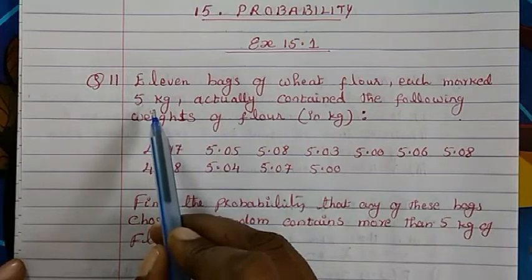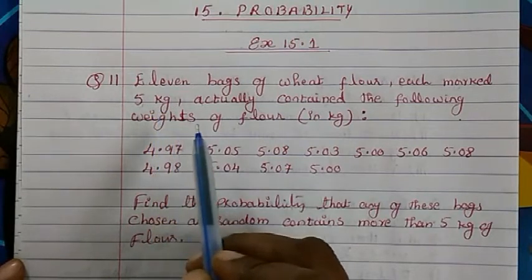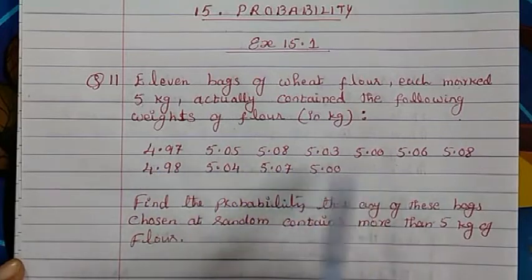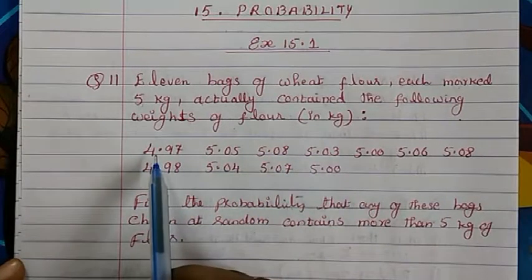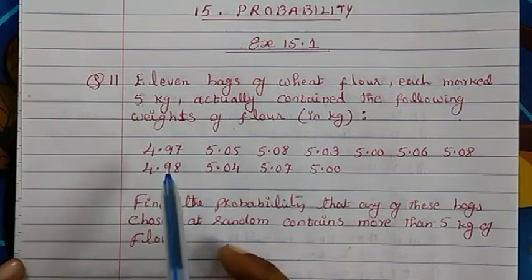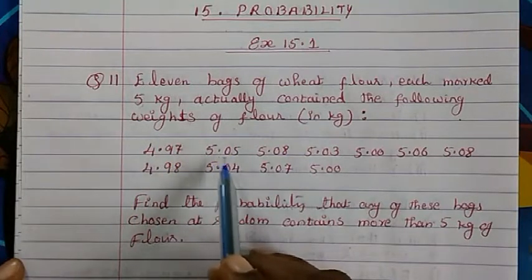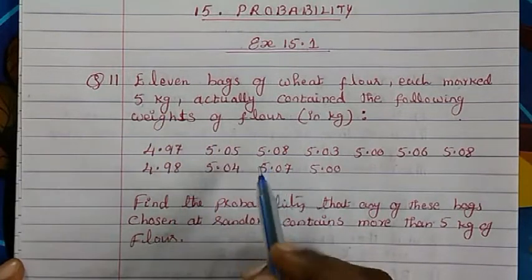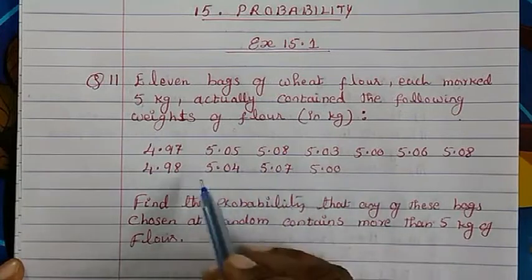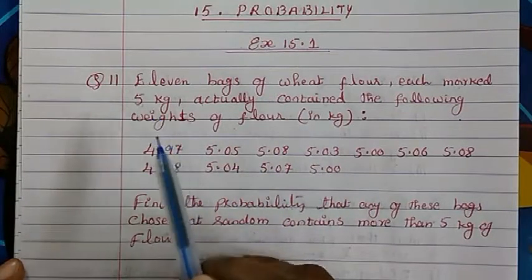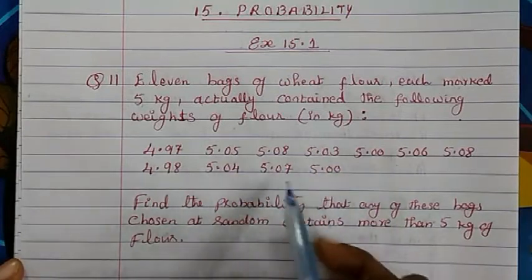So there are 11 bags of wheat flour and in that bags it is marked 5 kg. Actually the bags it is written 5 kg but inside if we see there are varying weights. For example one sack is 4.97 kg only but it is written 5 kg. Another sack 5.05 kg but it is written 5 kg. Same way all these other bags, it is written 5 kg but actually the weight varies.